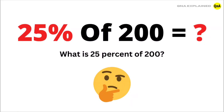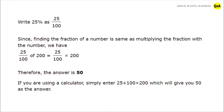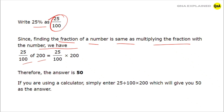What is 25% of 200? Write 25% as 25 upon 100. Since finding the fraction of a number is the same as multiplying the fraction with the number, we have: 25 upon 100 of 200 is equal to 25 upon 100 into 200.